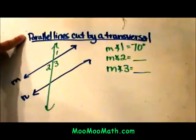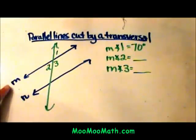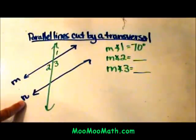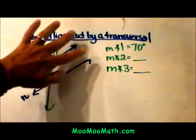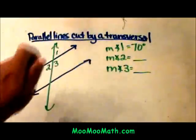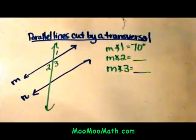First of all, we know what parallel lines are. We have two lines over here, line M and line N. They are drawn in blue and are parallel to each other, which means they go forever and never touch. They lie in the same plane.